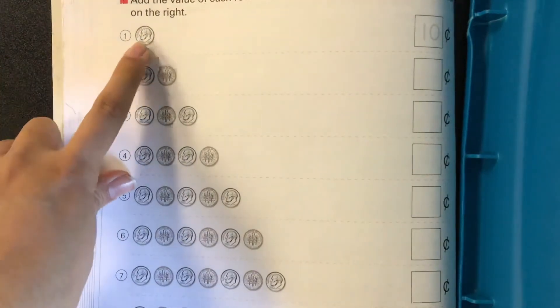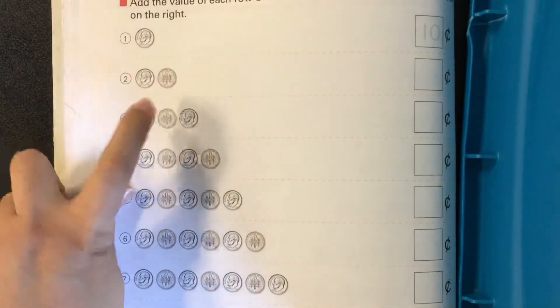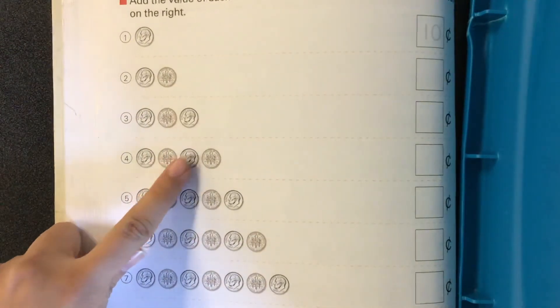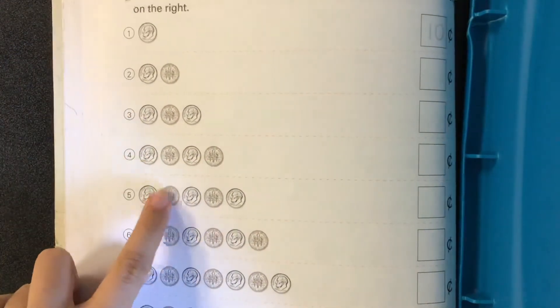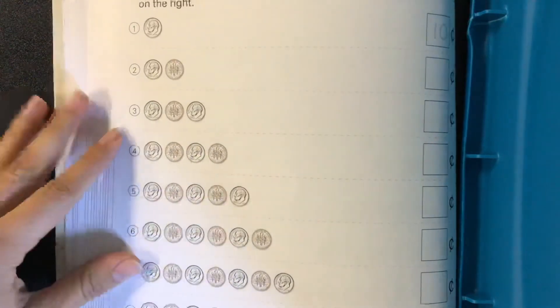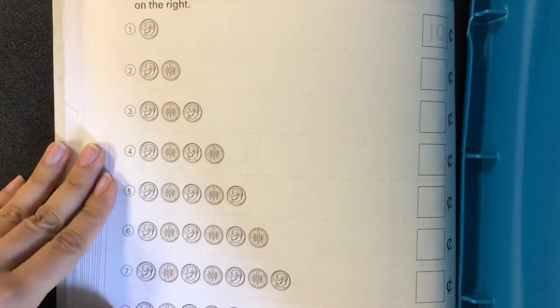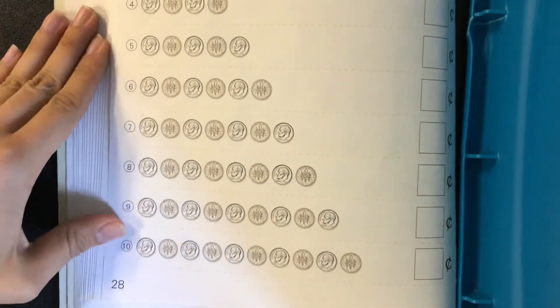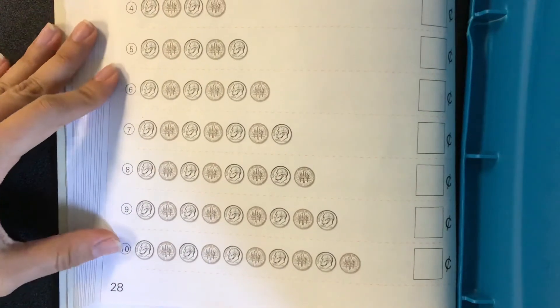to either add or skip count. Ten, twenty, thirty, forty, fifty. But it's up to you. So you guys can pause the video. Here's one through seven. And there's the rest of them, five through ten.